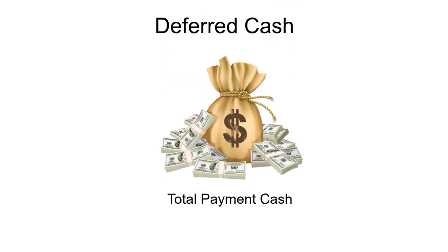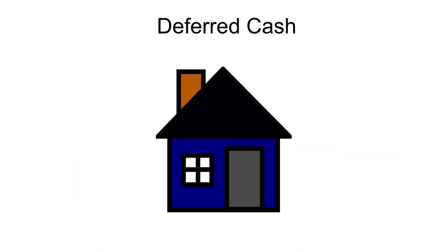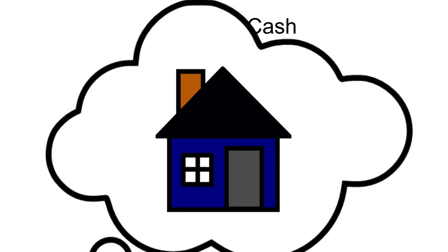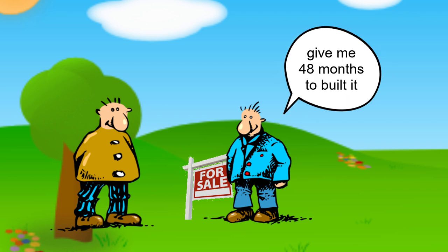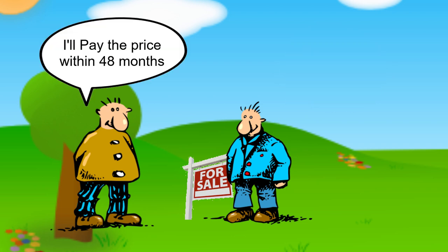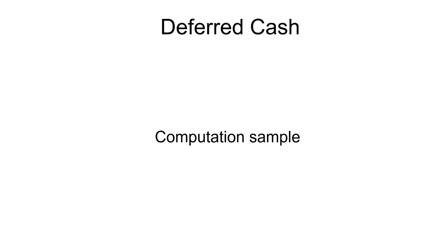When we say deferred cash, it is withheld until a stated time — a deferred payment. Simply put, you're going to pay the amount of the unit you purchased within a specific period of time. For example, you are purchasing a unit and the property is still in a pre-selling stage — meaning still under construction — and the developer allows you to pay the unit within a span of 48 months. So if you purchase a property of five million, you're going to pay it in 48 months.